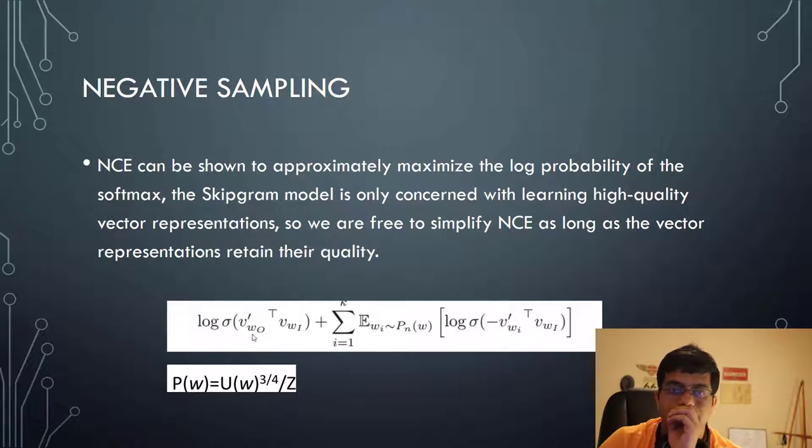If you see the term over here, basically the first term is nothing but the inner product of context vector with the center word and we are trying to maximize this log probability. And if you see the second term, it's basically over the k samples, some expected value of word vector context word vector with center word vector. What we are trying to do is basically we want the sigmoid function, which basically has a very interesting property: sigmoid of minus x equals to one minus sigmoid of x, which basically means we are trying to reduce probability of these words occurring together.